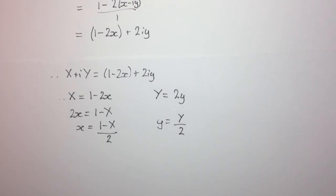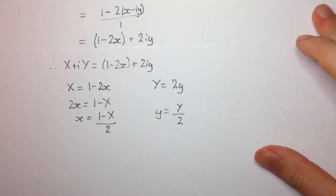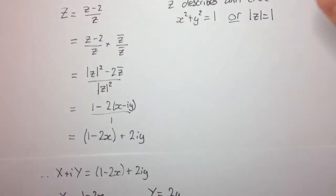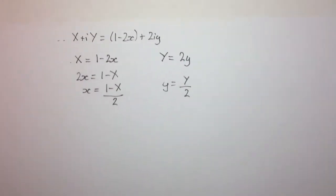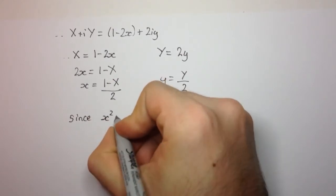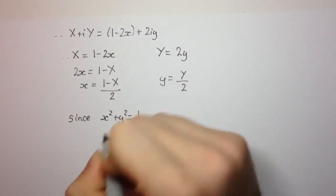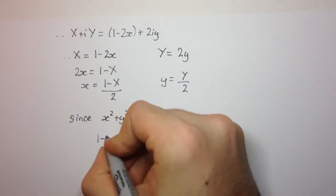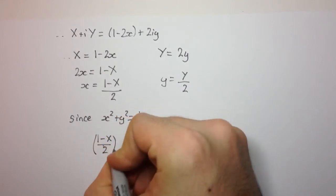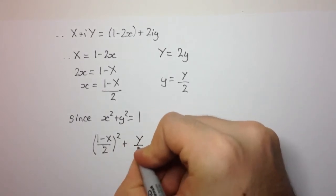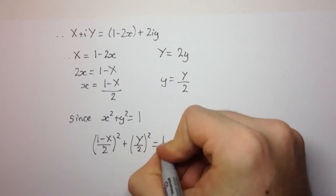Okay. But if you remember, they told us that z describes the unit circle, and we thought of it in two ways. One of the ways being little x squared plus little y squared equals 1. So we can say now that since x squared plus y squared equals 1, we can substitute in our values for little x and little y into this, and we can get an equation. So we have 1 minus capital X over 2 all squared plus capital Y over 2 squared equal to 1.